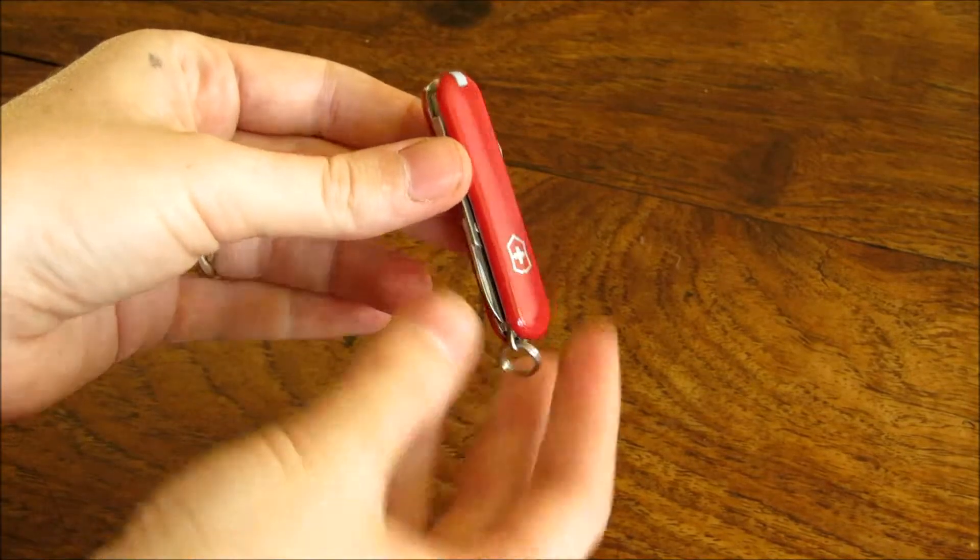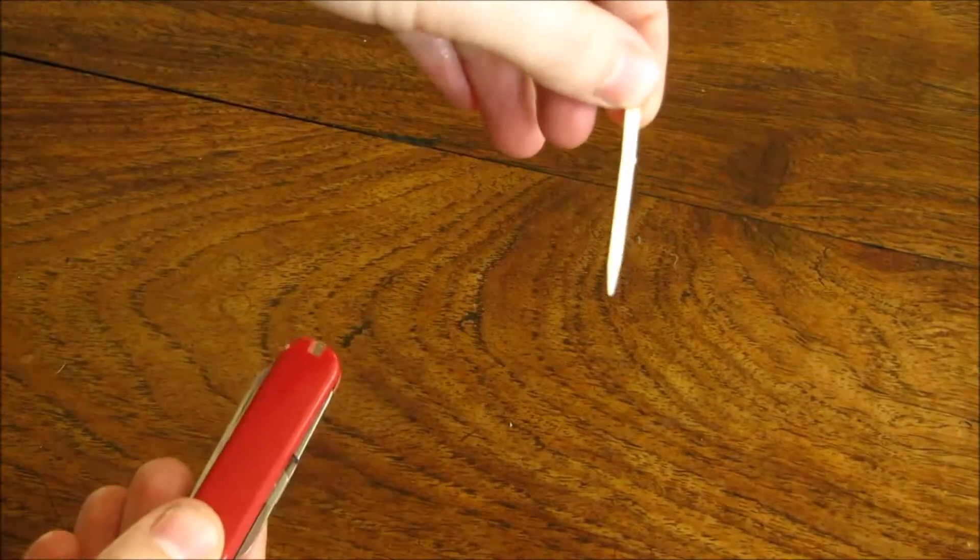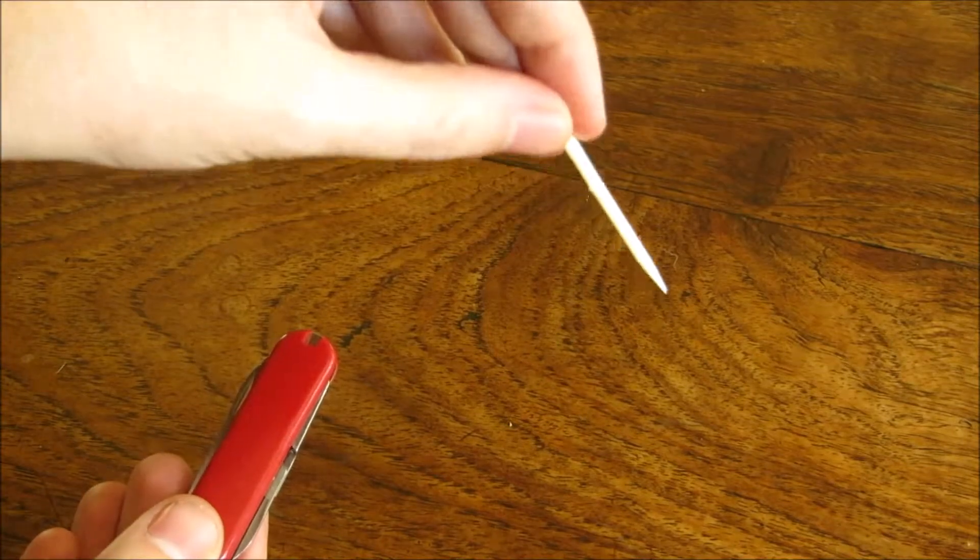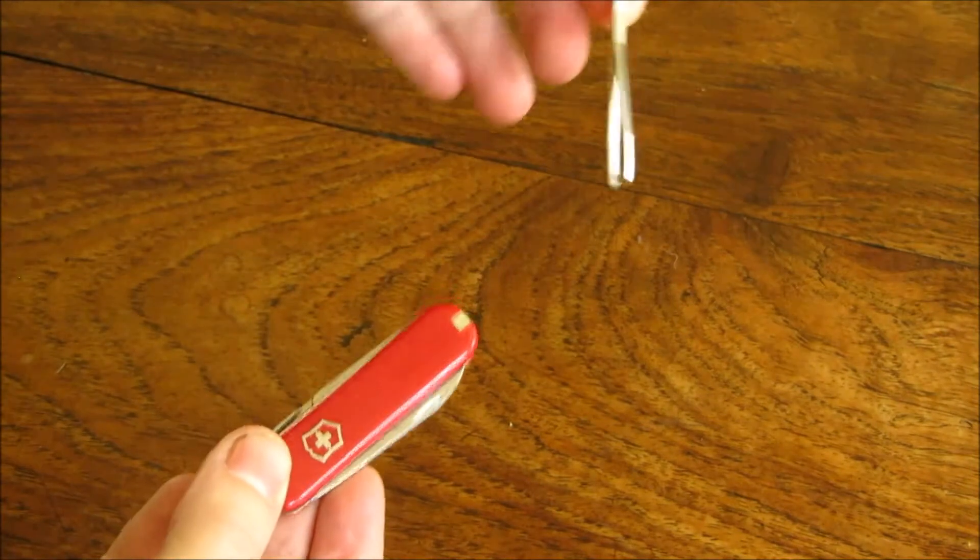In addition to the little keychain attachment, it also has a toothpick, a set of flat tweezers,